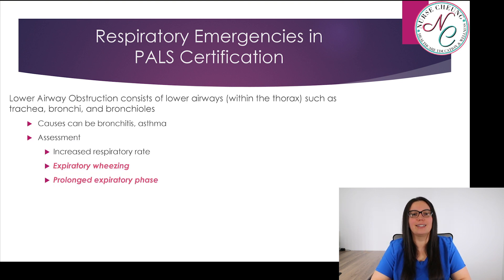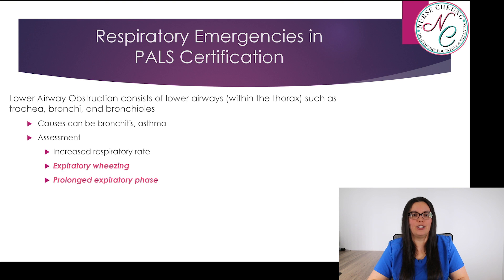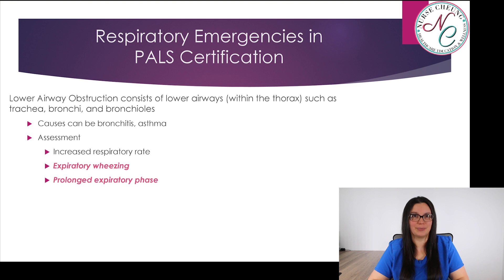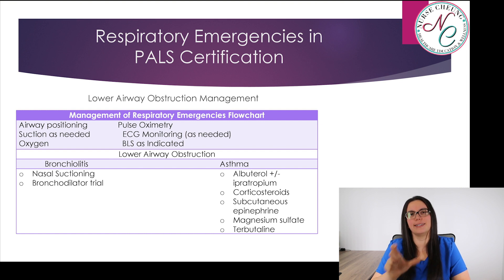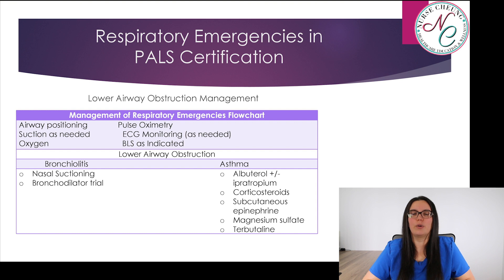Moving on to lower airway obstructions. This consists of the lower airways such as the trachea, the bronchi, and the bronchioles. Causes can be bronchitis and asthma. Assessment includes increased respiratory rate, expiratory wheezing, and a prolonged expiratory phase. Management is similar to upper airway, but we treat causes differently. With bronchiolitis, we use nasal suctioning and bronchodilator trials. With asthma, we treat with albuterol plus or minus ipratropium, corticosteroids, subcutaneous epinephrine, magnesium sulfate, or terbutaline.